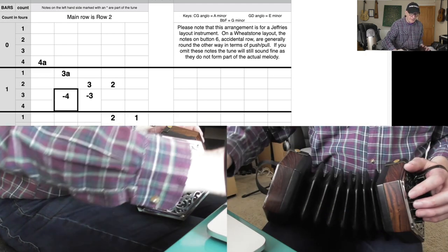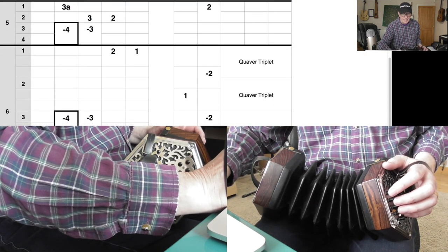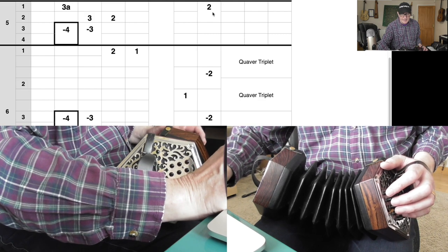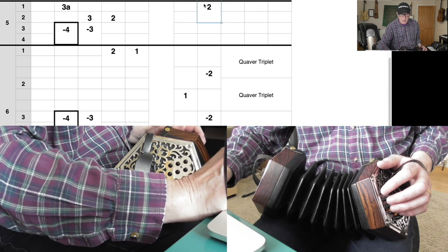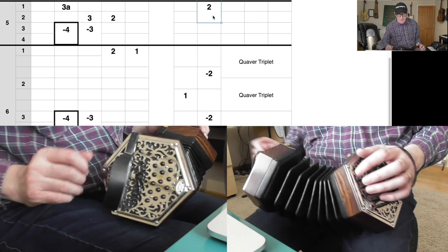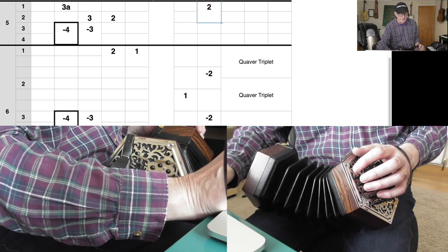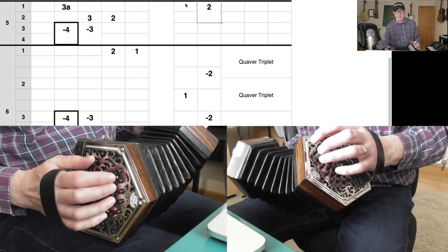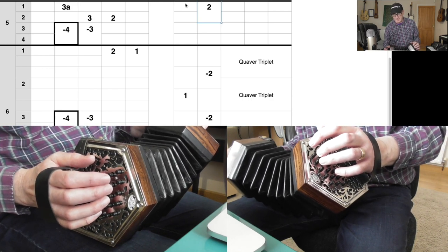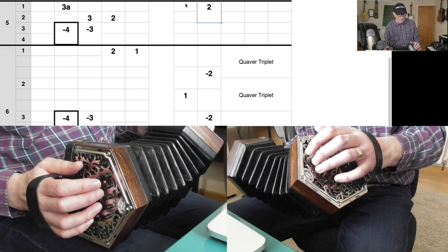Right, let's go back to our computer. Here we are. So it's button seven, finger two on the push, no minus sign, and held for two cells—held for the count of one and two. That's the only thing on the right hand side in that bar. And on the left hand side you've got this pattern which you've played before. You recognize that pattern, I'm sure.